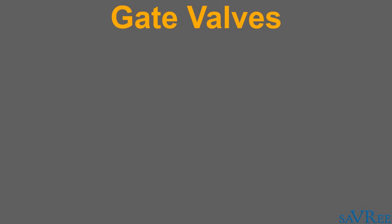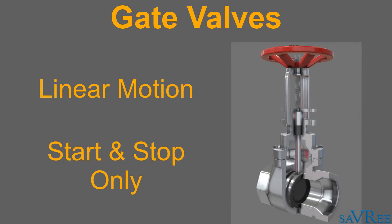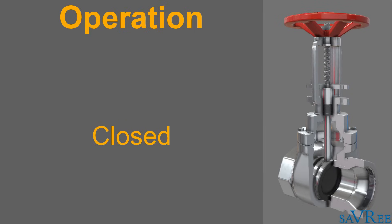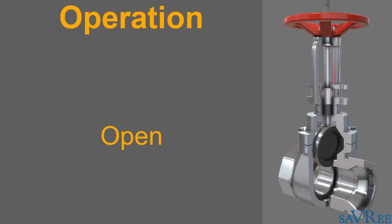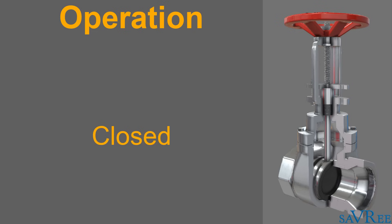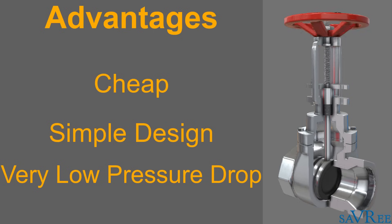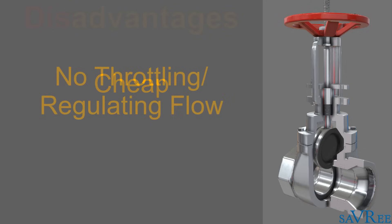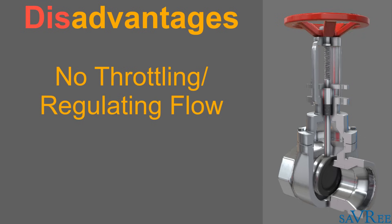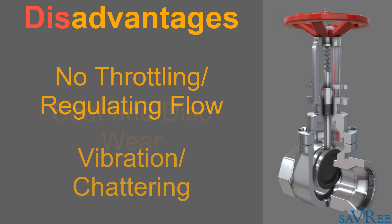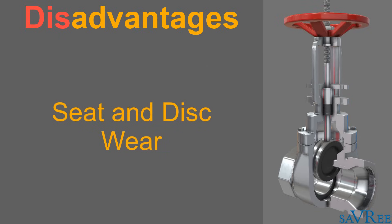Gate valves are the most common type of valves employed today. A gate valve is a linear motion type valve used to start or stop flow; it is not suitable for regulating flow. The disc of the gate valve is completely removed from the flow stream when the valve is fully open, allowing flow with virtually no resistance and a very low pressure drop. The major advantages are that it is cheap, has a simple design, and has a very low pressure drop when fully open. The major disadvantages are that it is not suitable for throttling, is prone to excessive vibration when only partially open, and compared to a globe valve, is more susceptible to seat and disc wear and potential leaking.